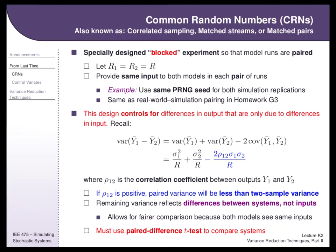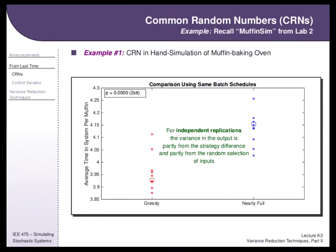Mathematically, by introducing covariance between two model outputs, we go from having variance of one model plus variance of the other — the independence measure — and we subtract off a term related to their correlation. If I have a model of a bank under operation one and operation two, and I put a big burst of traffic at 9am in both, both wait times go up due to that same burst. There's an opportunity to reduce variance in the comparison because they're both stressed by the same inputs.